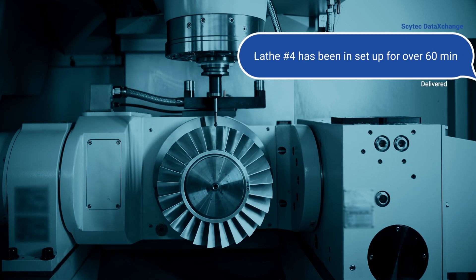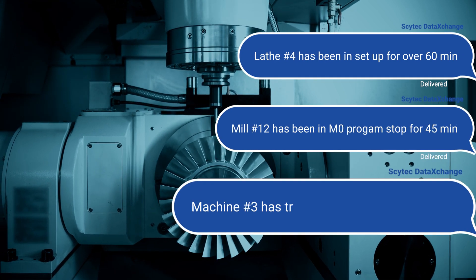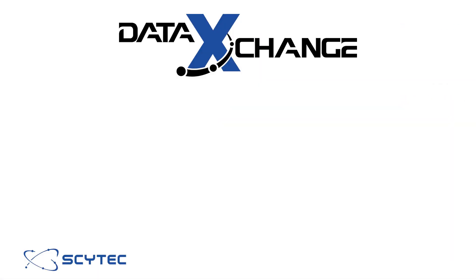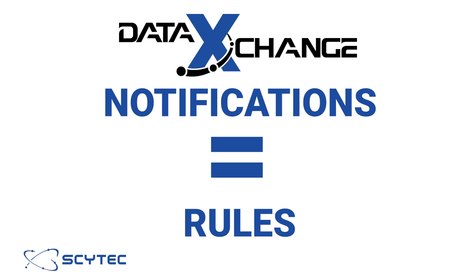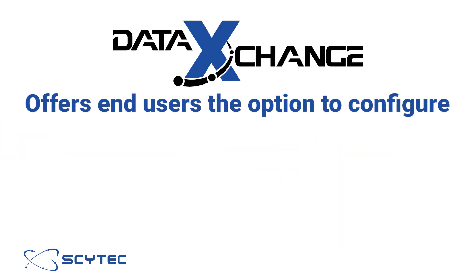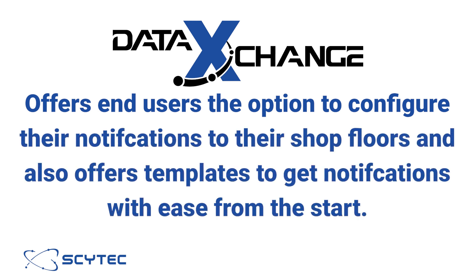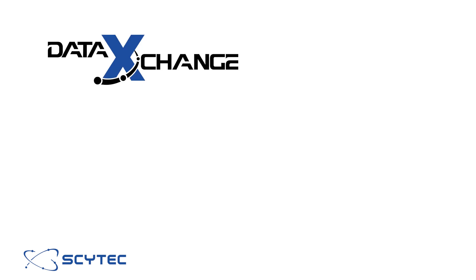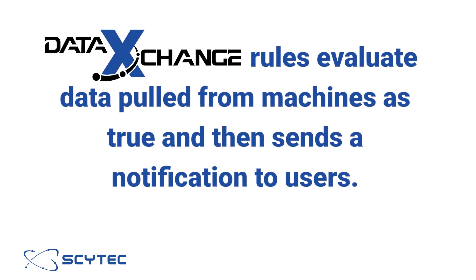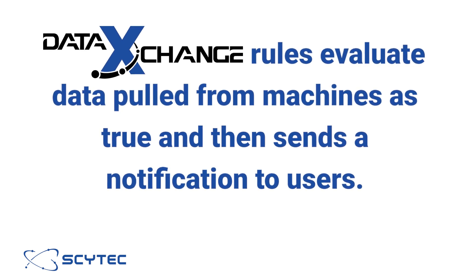These notifications are configured to your shop floor's needs and specific equipment through rules set up in SciTech Data Exchange. These rules automatically deliver awareness of certain events directly to your smartphone or inbox, and can be configured by end users or selected as templates inside of SciTech Data Exchange. When the qualifying rule determines a notification needs to be sent, the rules are enabled in real-time as data is received from shop floor equipment.